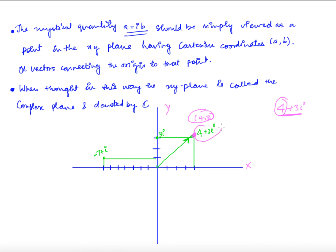You can consider 4 + 3i either as a point in the plane or as a vector joining that point with the origin. Similarly, 3i is 0 + 3i, so x is 0 and y is 3. And minus 7 + i has x-coordinate minus 7 and y-coordinate 1. Both representations — as a point or as a vector — are correct. This plane is called the complex plane and is denoted by C.